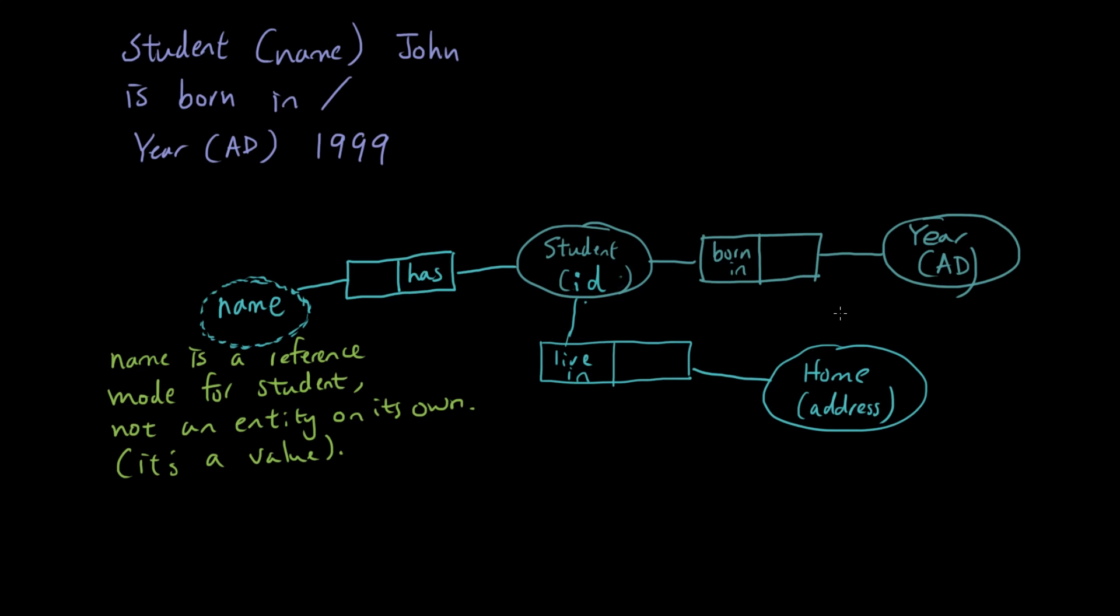Okay, now so far all of these relationships, they are all binary relationships. Because there's only two entities involved with each of these relationships. And in the next lesson we're going to start talking about ternary and other sort of relationships.